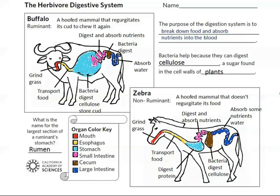In summary, non-ruminants like zebras, or animals like horses, digest plant material faster but absorb fewer nutrients during each meal. To compensate, these animals must eat more meals per day. In comparison, ruminants such as buffalo or animals like cows are more efficient in breaking down plant material, but the food passes through their digestive system slower.